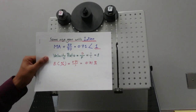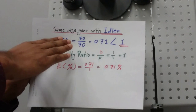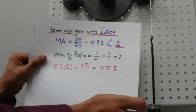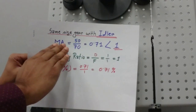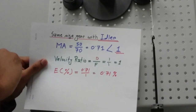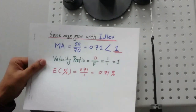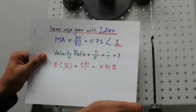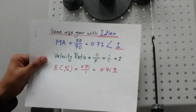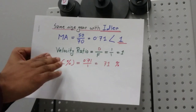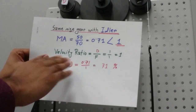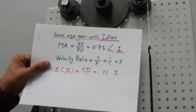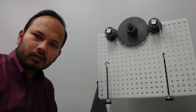The total load to pull upward was 50 grams, and I had to use 70 grams on the driver side to move it. To find the mechanical advantage, we divide the load by the effort: 50 over 70, which is 0.71. The mechanical advantage is less than one, meaning we must put more effort to raise a smaller load. The velocity ratio remained 1, and the efficiency — mechanical advantage over velocity ratio times 100 — is 71%.